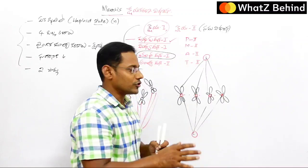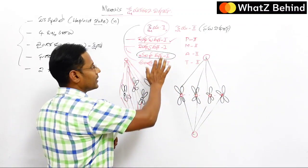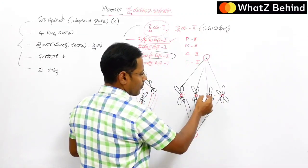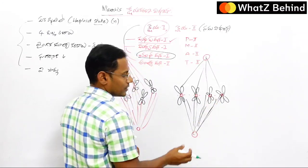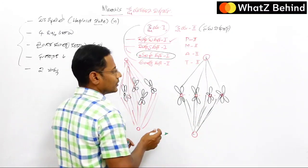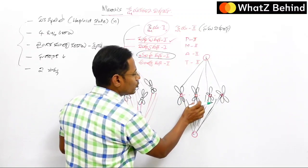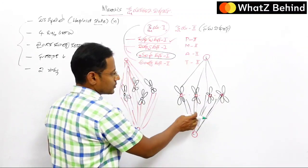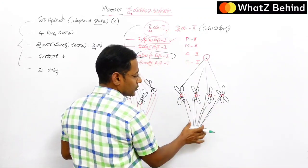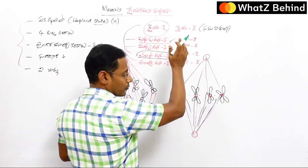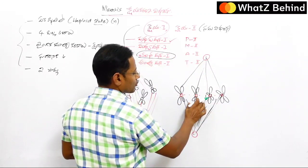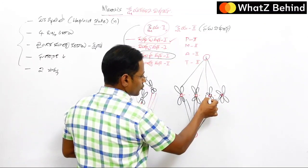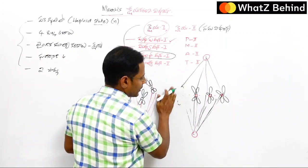In Anaphase I (chalana dasha), the spindle fibers attached to chromosomes contract and pull chromosomes toward the poles. The chromosomes are pulled towards the polar regions — half of the chromosomes are pulled to one side and half are pulled upward toward the opposite pole.